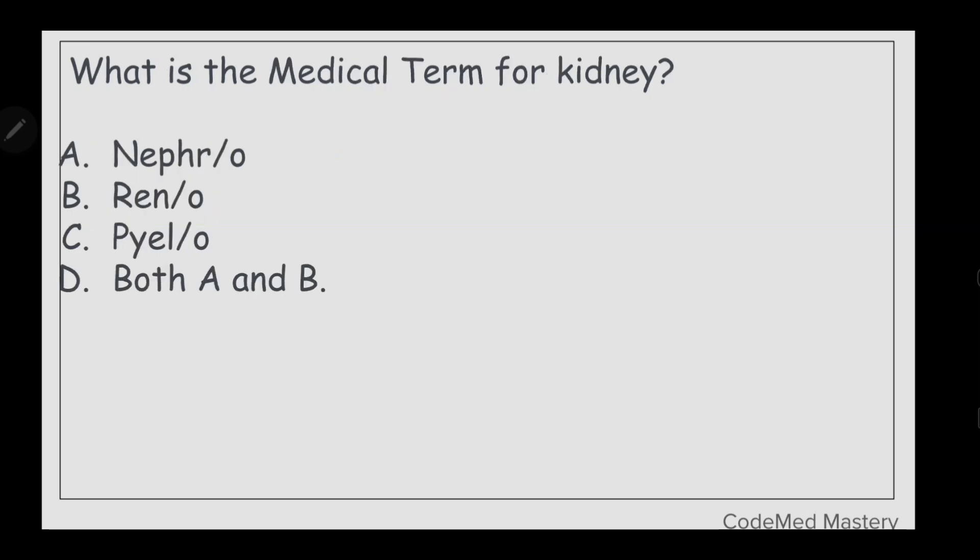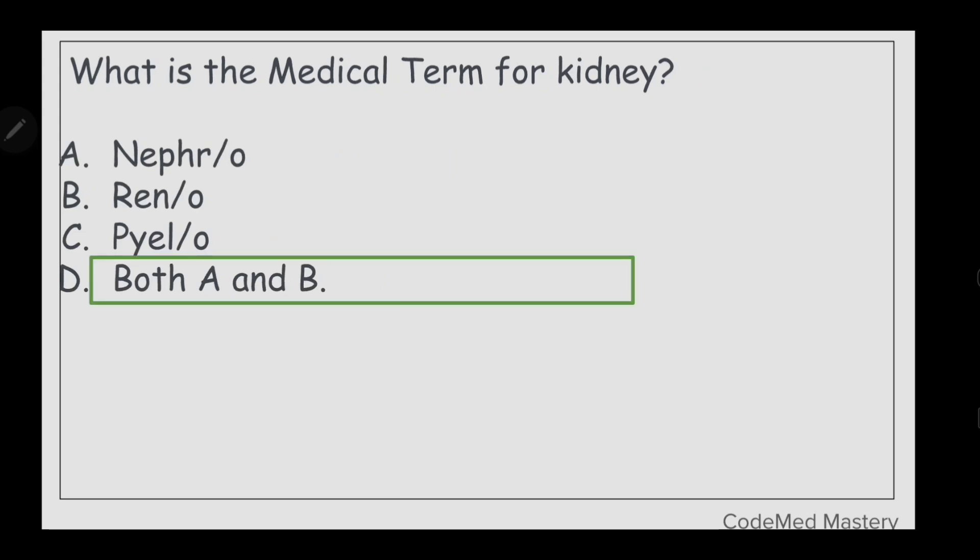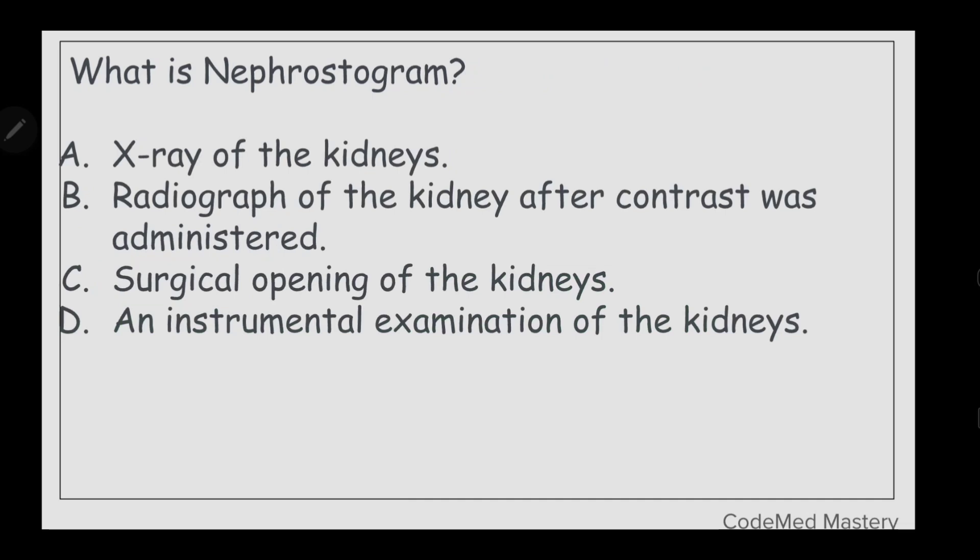Next question: what is the medical term for kidney? Option A: nephro, option B: reno, option C: pilo, option D: both A and B. The right answer is option D, both A and B, because both the words nephro and reno are the medical terms for kidney.